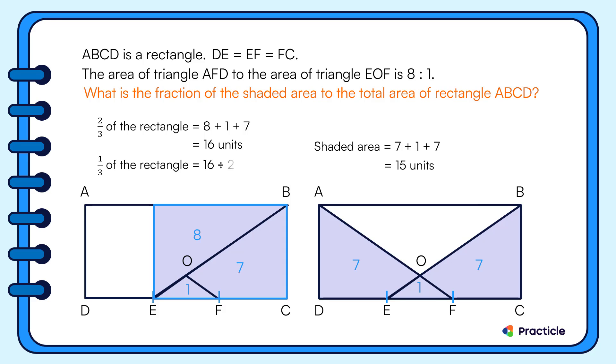We are going to divide 16 by 2 to find the number of units that represent 1 third of this rectangle. When we multiply this by 3, this gives us a total of 24 units.